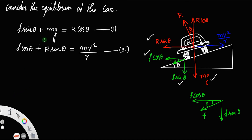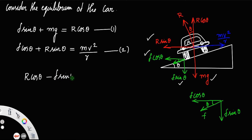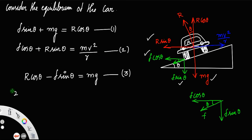In order to solve this, rearrange equation number one: mg equals R cos theta minus f sin theta. Call that equation number three. Now, divide equation two by equation three.